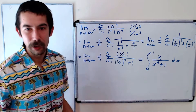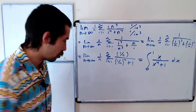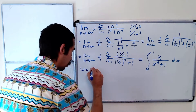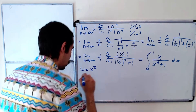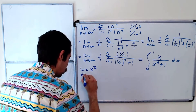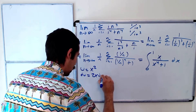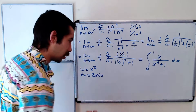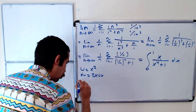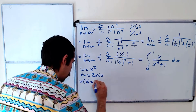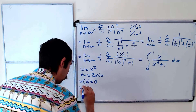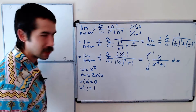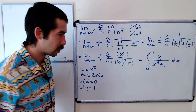The way we evaluate this integral is with u-substitution. We let u equal x squared, so du equals 2x dx. For the bounds: u(0) = 0² = 0, and u(1) = 1² = 1. So our bounds happen to stay the same, but that's just by chance.